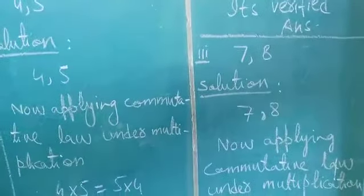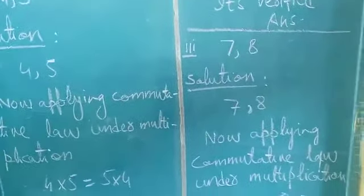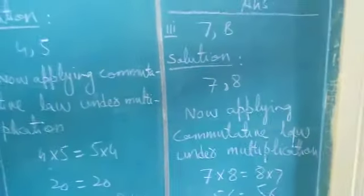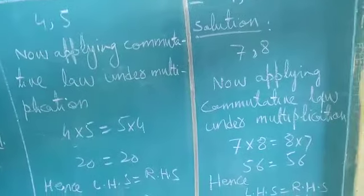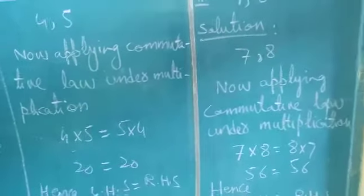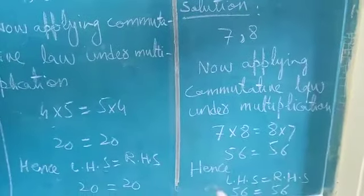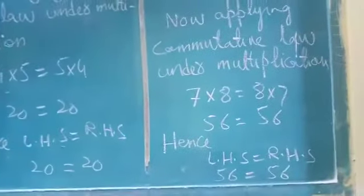Third part of question number 2 is 7 and 8. Applying commutative law under multiplication: 7 multiplied by 8 is equal to 8 multiplied by 7. Seven 8s are 56 and eight 7s are 56. Hence left hand side is equal to right hand side: 56 = 56. Hence it's verified.